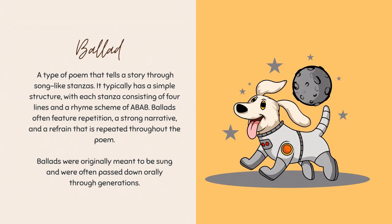When we talk about rhyme scheme, we're talking about the end rhyme of the poem — those last syllables or words that rhyme with each other. The way that we notate rhyme scheme is we start with the letter A. If the second line rhymes with the first line, that would also be an A. If it doesn't rhyme, then it becomes a B. If the third line rhymes with the first line, it gets an A; if it rhymes with the second line, it gets a B; if it doesn't rhyme with any of them, it gets a C. The ballad follows a rhyme scheme of A-B-A-B in the four-line stanzas.